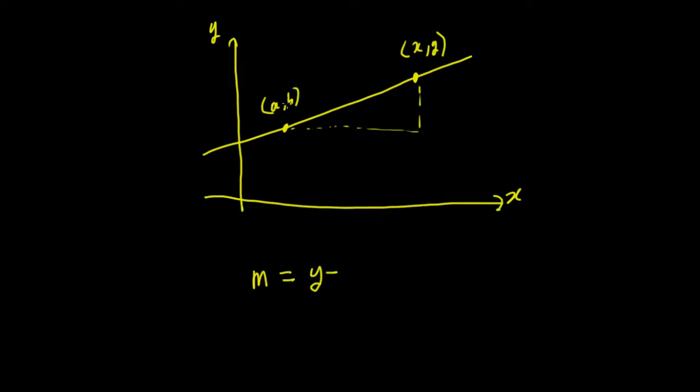Divided by this distance here from there to there, which is our distance x, minus this distance from here to here, which is our distance a.